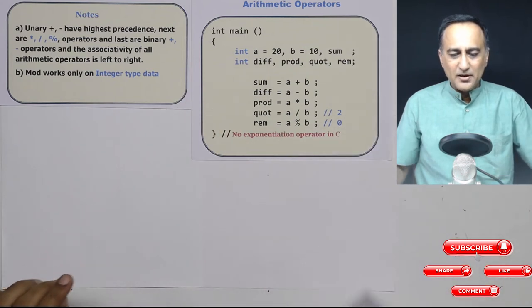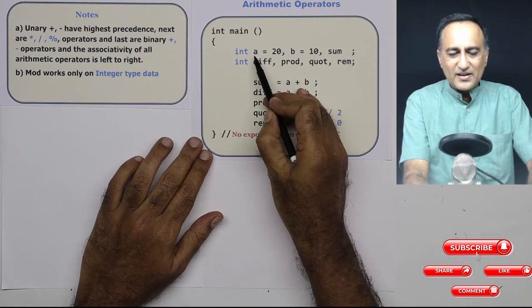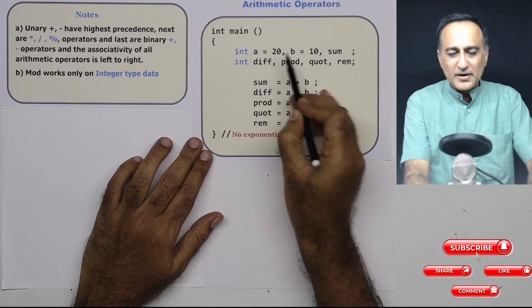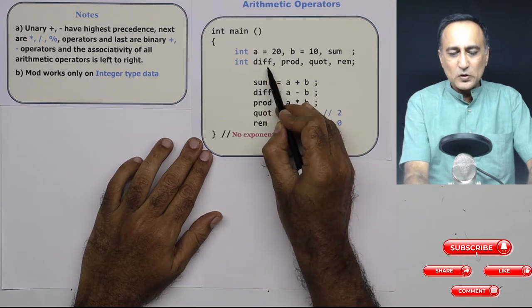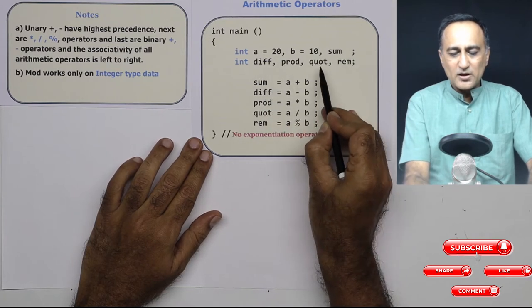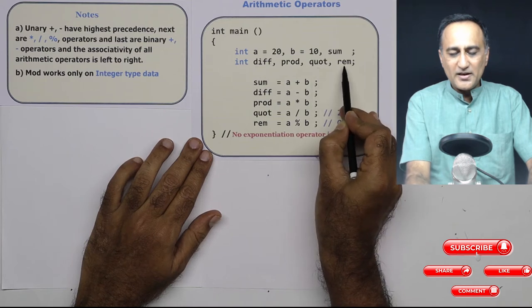What I have done here is I have declared integer variable A is 20, B is 10. And I have taken the third integer variable as sum, then I have four integer variables called difference, prod or product, quotient and remainder.